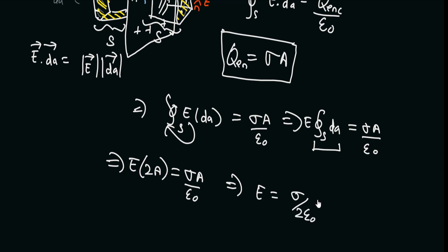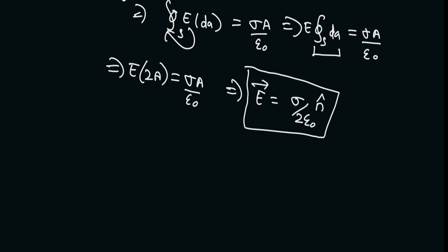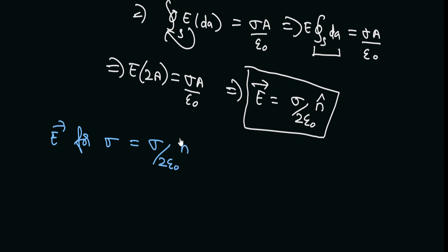Since the electric field is perpendicular to the plane, that is, along the normal unit vector N, we can convert this into a vector equation. The electric field for a plane sheet of charge carrying a uniform charge density of sigma will be equal to sigma divided by 2 epsilon naught, directed along the perpendicular direction to the plane.